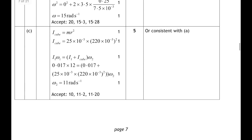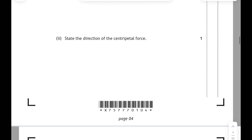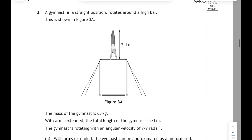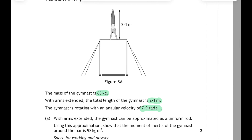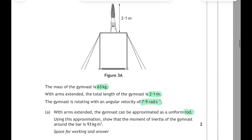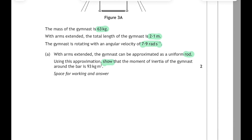Let's have a look at another one to see how it compares — the 2019 paper, and again it's question 3 on rotational dynamics. A gymnast in a straight position rotates around a high bar as shown in figure 3A. The mass of the gymnast is 63kg, and with arms extended the total length of the gymnast is 2.1m. The gymnast is rotating with an angular velocity of 7.9 rad/s, and with arms extended can be approximated as a uniform rod.